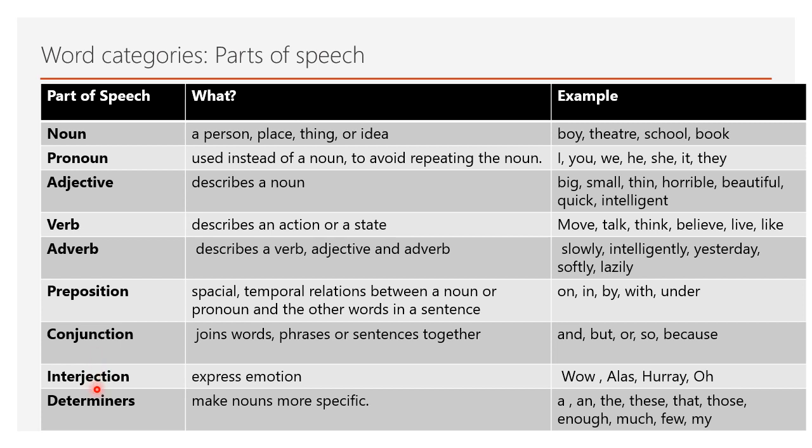Interjection is used to express emotions. For example, Wow, Alas, Hurray, Oh. Wow, you have done a wonderful task. That's some kind of expression. Determiners are used to make nouns more specific. A girl. The boy hit on the ball. Those girls are doing the task very nicely. That means the girls are the nouns and those represent that particular girl. These are the parts of speech in English language.